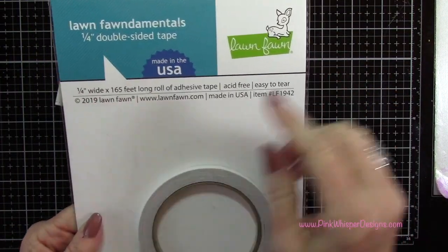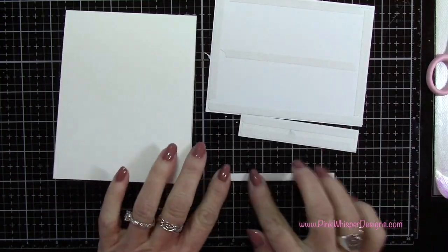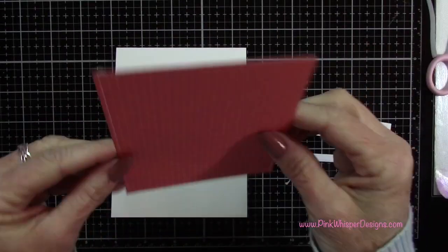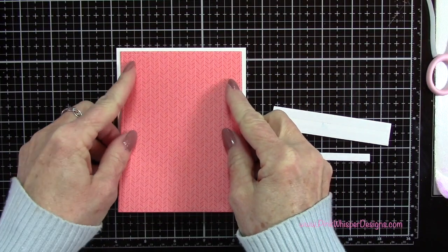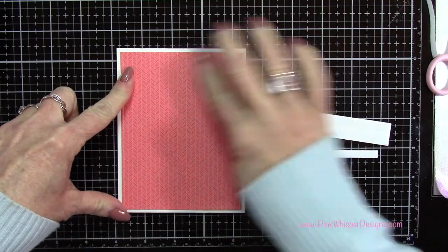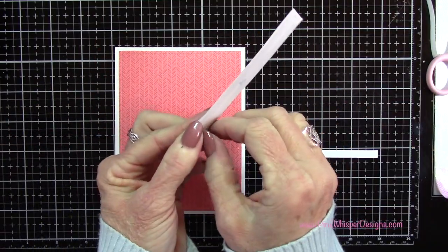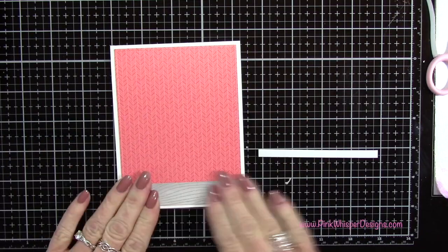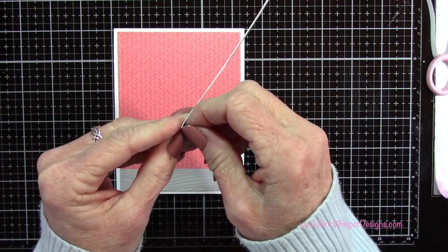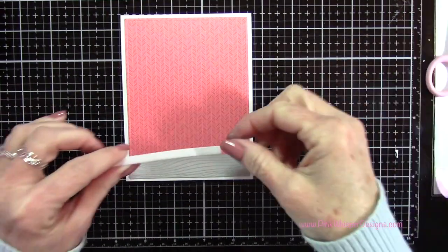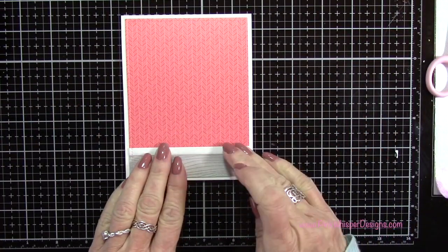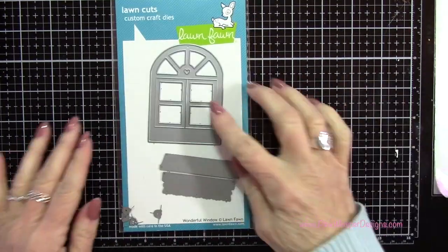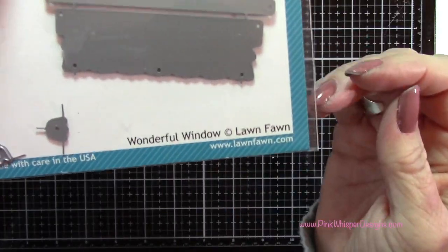Now using my quarter inch double-sided tape, I'm going to put tape on all of these pieces here. I'm going to attach this wallpaper to the card, then attach the floor. Then I'm going to attach this little piece of trim work, keeping that shadowed part down towards the bottom here.